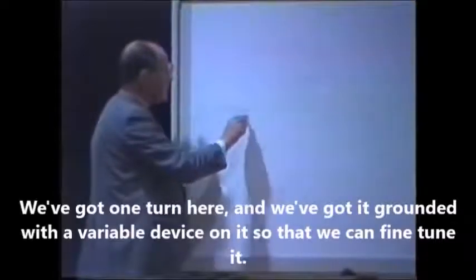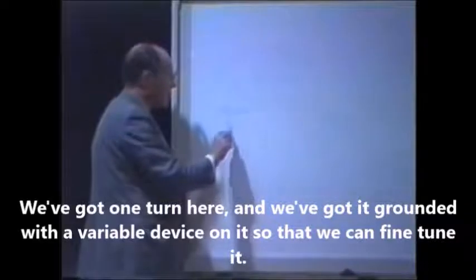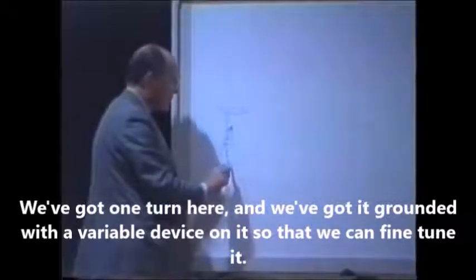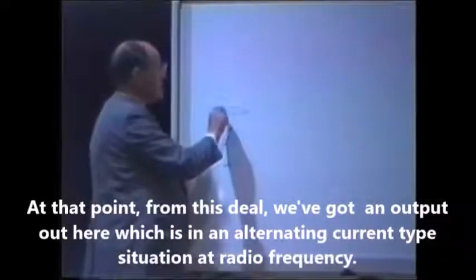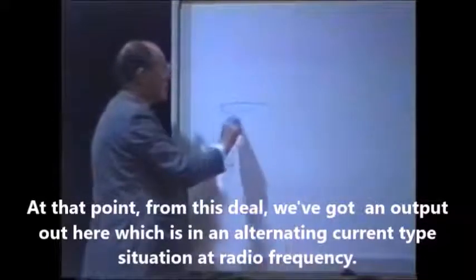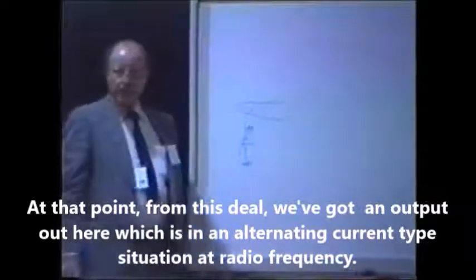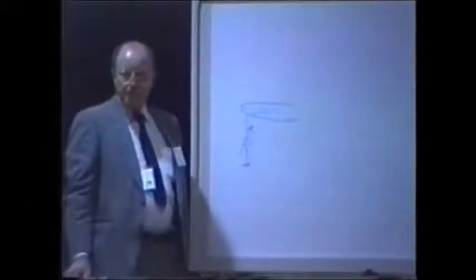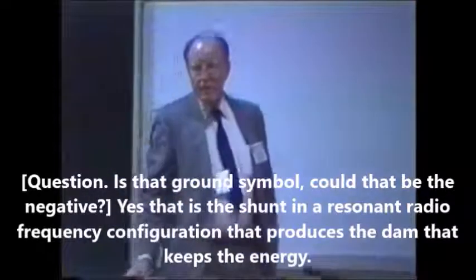We're going to pick up where we have the one turn, and take it on to the next steps. We've got one turn here, grounded with a variable device so that we can fine tune it. From this, we've got an output which is in an oscillating, alternating current type situation at radio frequency.